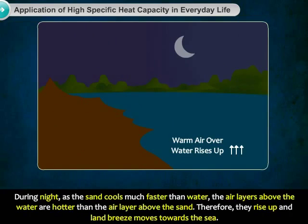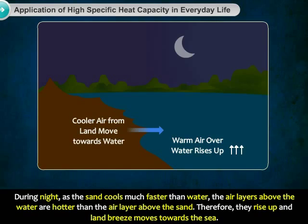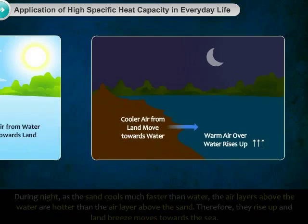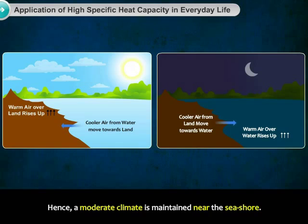During night, as the sand cools much faster than water, the air layers above the water are hotter than the air layer above the sand. Therefore, they rise up and land breeze moves towards the sea. Hence, a moderate climate is maintained near the seashore.